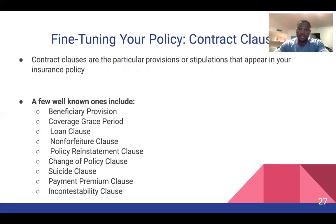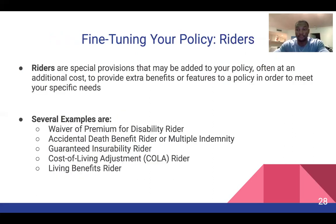Fine-tuning your policy: contract clauses are particular provisions or stipulations that appear in your insurance policy. A few well-known ones include beneficiary provision, coverage, grace period, and loan clause. Riders are special provisions that may be added to your policy, often at an additional cost, to provide extra benefits or features to meet your specific needs. Examples include: waiver of premium for disability rider, accidental death benefit rider or multiple indemnity, guaranteed insurability rider, cost of living adjustment rider, and living benefits rider.